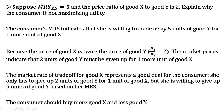Let's do an example. Suppose the marginal rate of substitution of good x for good y is 5 and the price ratio of good x to good y is 2. The consumer's MRS indicates she is willing to trade away 5 units of good y for one more unit of good x — her willingness to pay. But because the price of good x is twice the price of good y, the market requires only 2 units of good y for one unit of good x. The market rate of trade-off is a good deal — she only has to give up 2 units, but is willing to give up 5. So the consumer should buy more good x and less good y.